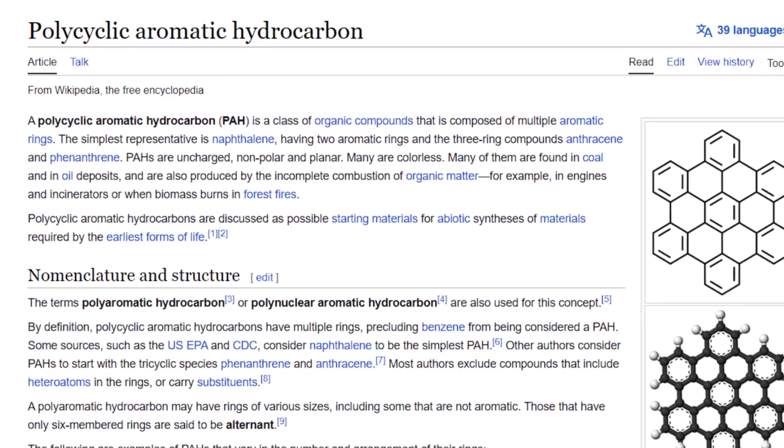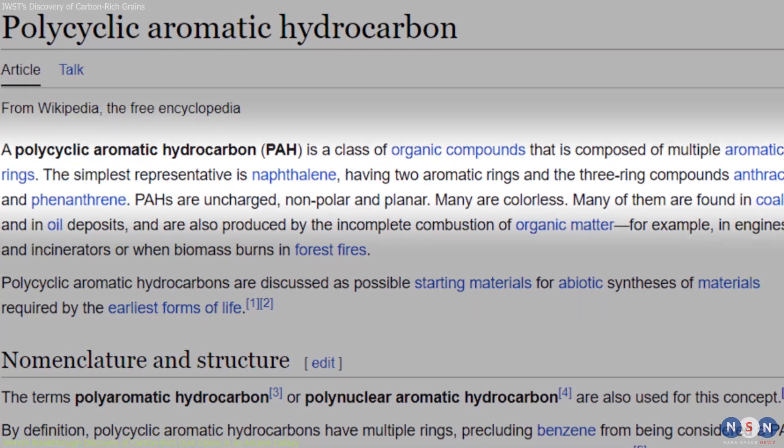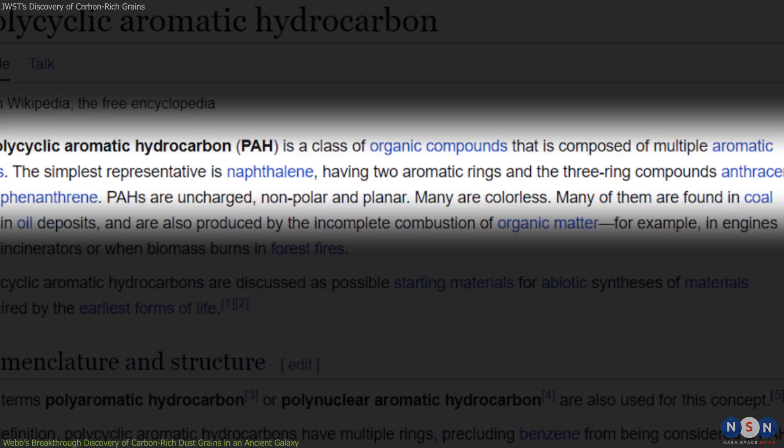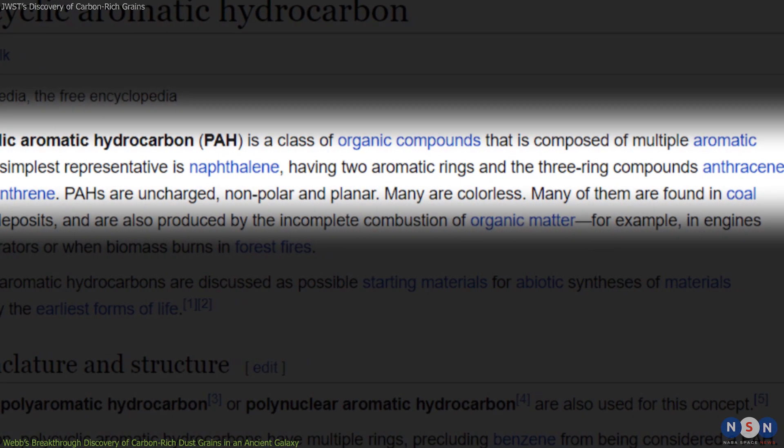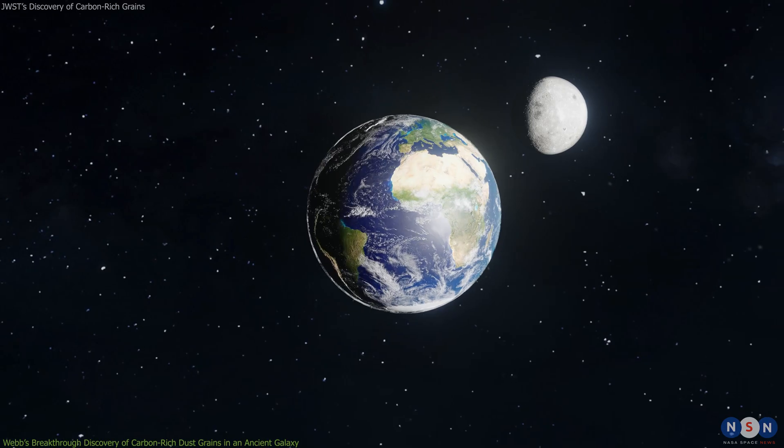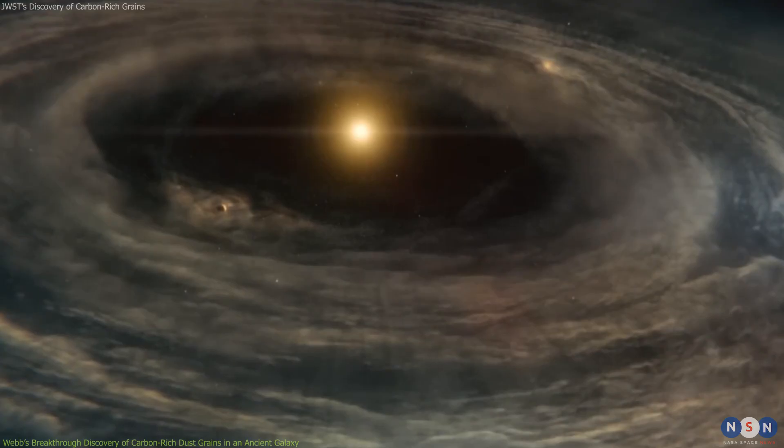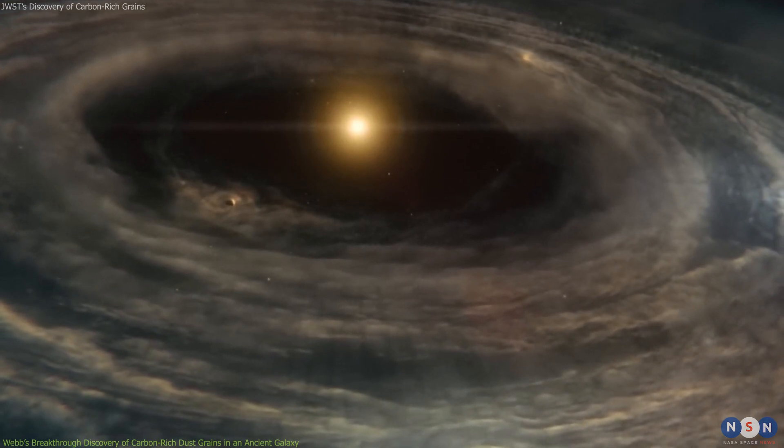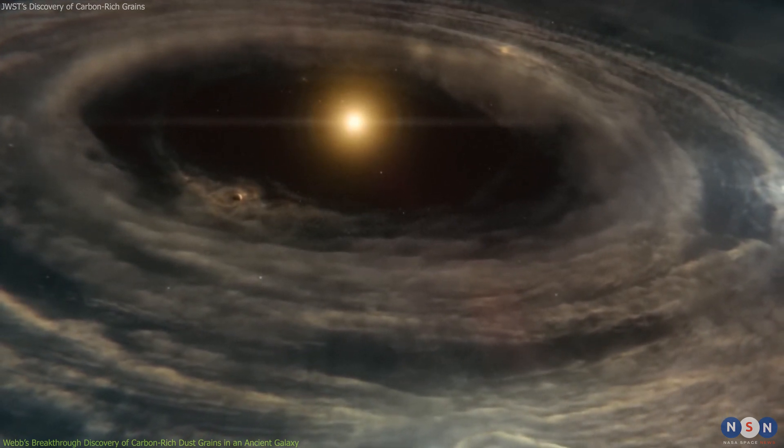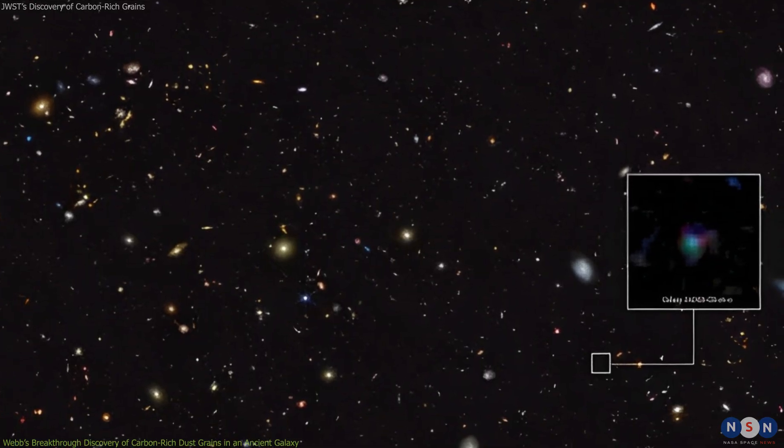PAHs are complex organic molecules that consist of rings of carbon atoms with hydrogen atoms attached to them. They are commonly found on Earth in sources such as coal, oil, and smoke. They are also abundant in space, especially in regions where stars are forming.